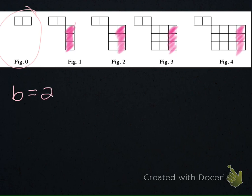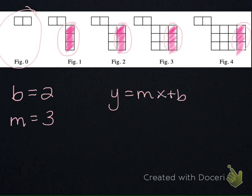And then we noticed that each time we were getting three new tiles that we shaded in. So that means our growth, or our m, is going to be 3. If we use the rule y equals mx plus b, we're going to substitute the 2 in for the b and the 3 in for the m. And our equation, or our rule, becomes y equals 3x plus 2.